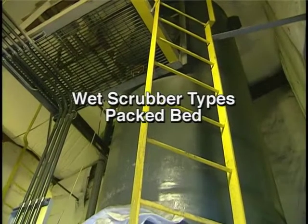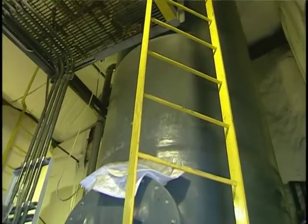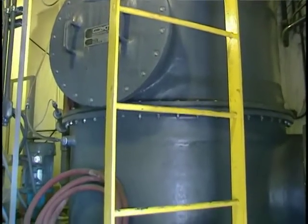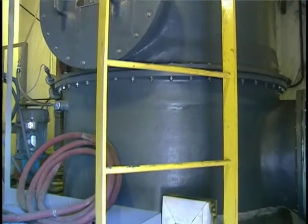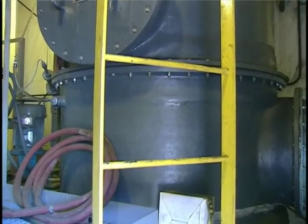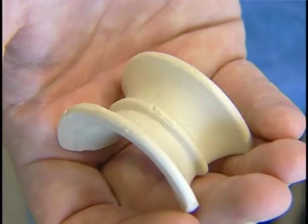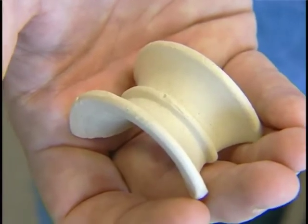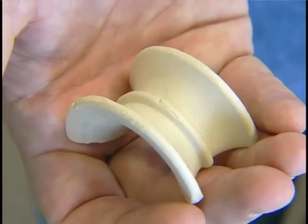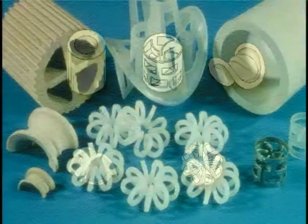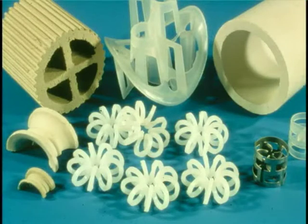Packed bed scrubbers are another type of medium energy collector. Packed bed collectors spread the liquid over packing material in order to provide a large surface area for particle impaction. There are many designs for the packing materials, but they all have large surface area while maintaining open areas for the gas flow. Although they are usually made of plastic, metal and ceramic packings are available when plastic cannot be used.